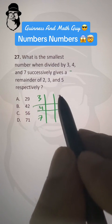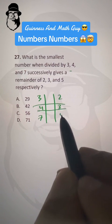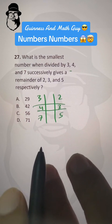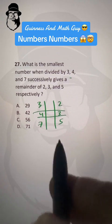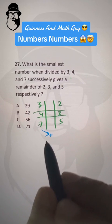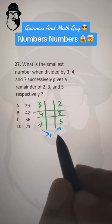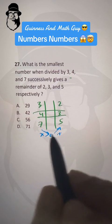And remainders are 2, 3, and 5, right? So we need the smallest one. So we will start with 0. 7 times 0 is 0, and then plus 5 is 5.